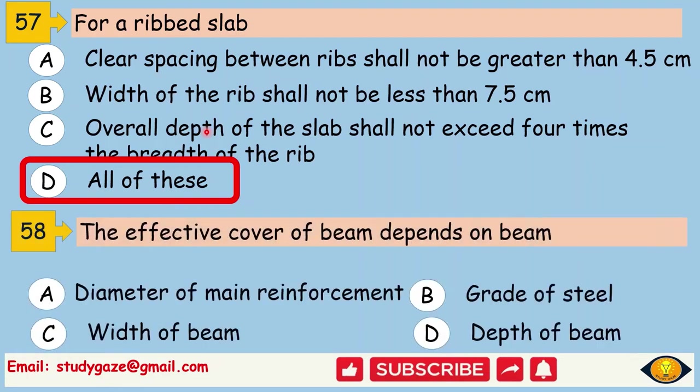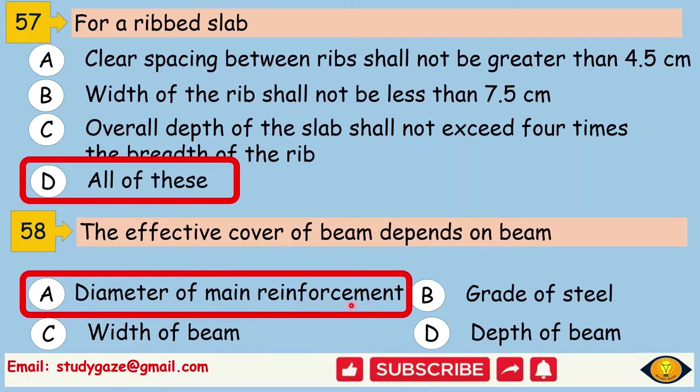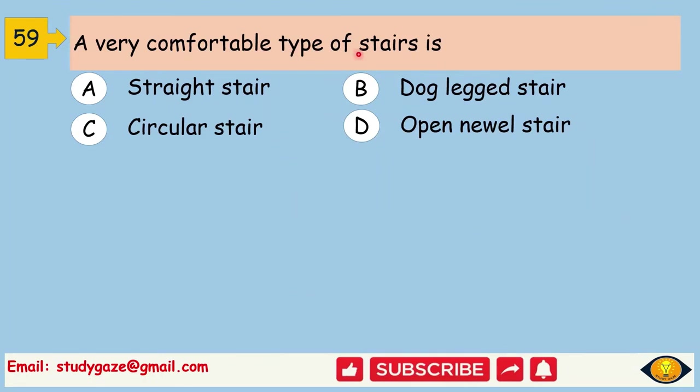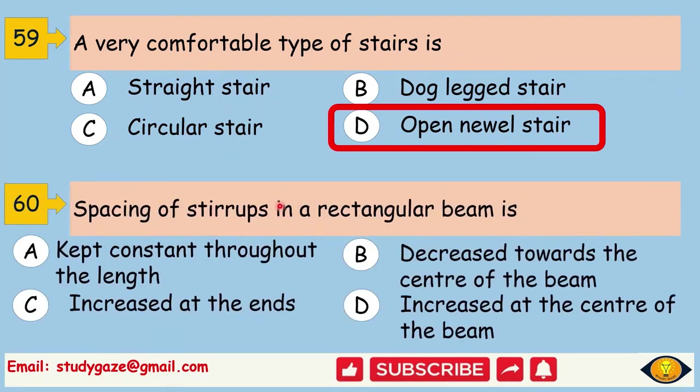The effective cover of beam depends on diameter of main reinforcement. A very comfortable type of stairs is. Answer is Open newel stair. Spacing of stirrups in a rectangular beam is. Answer is increased at the center of the beam.